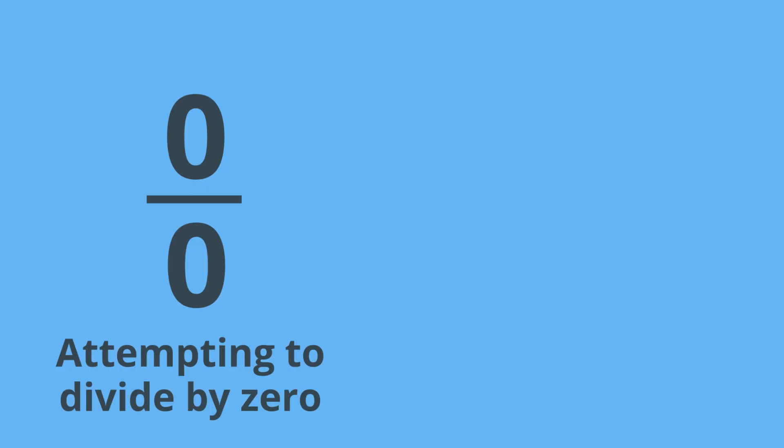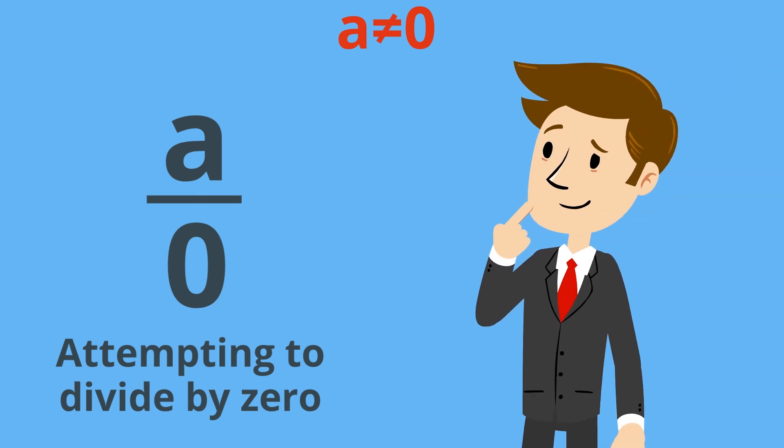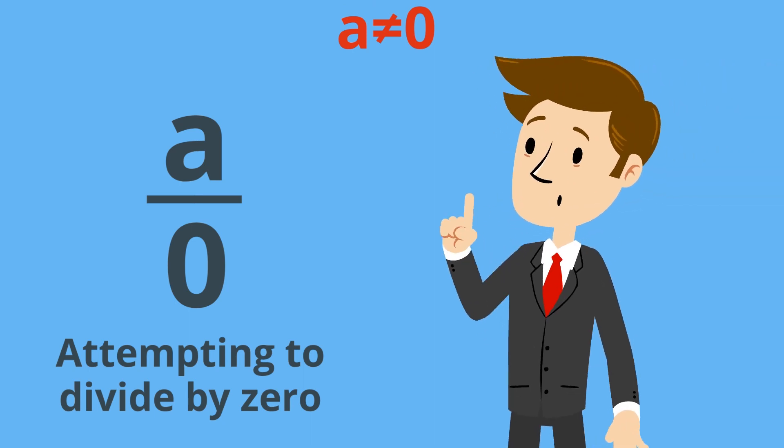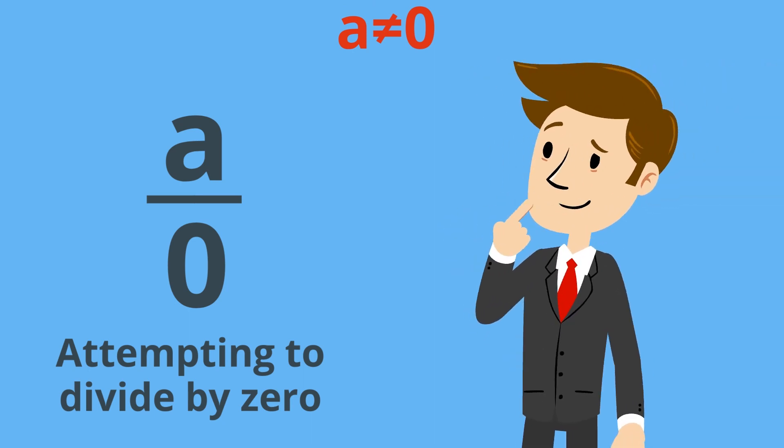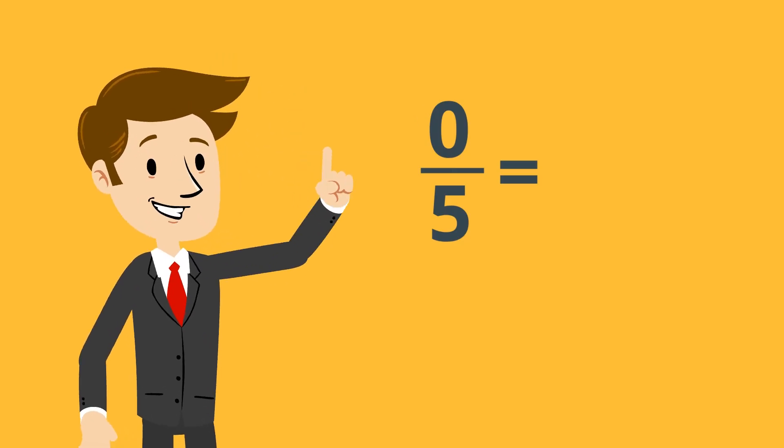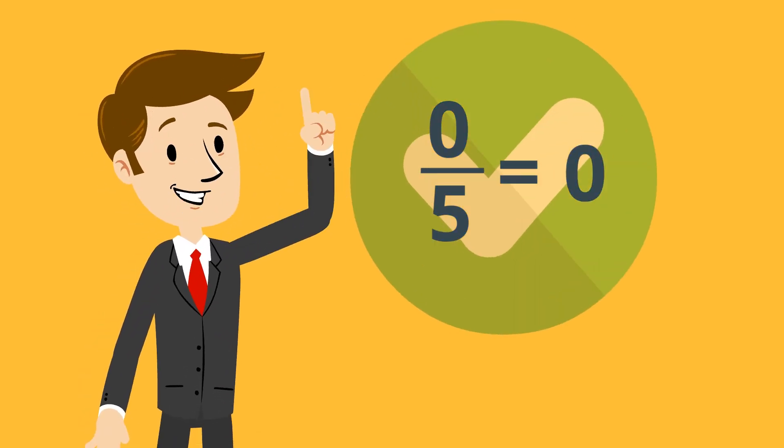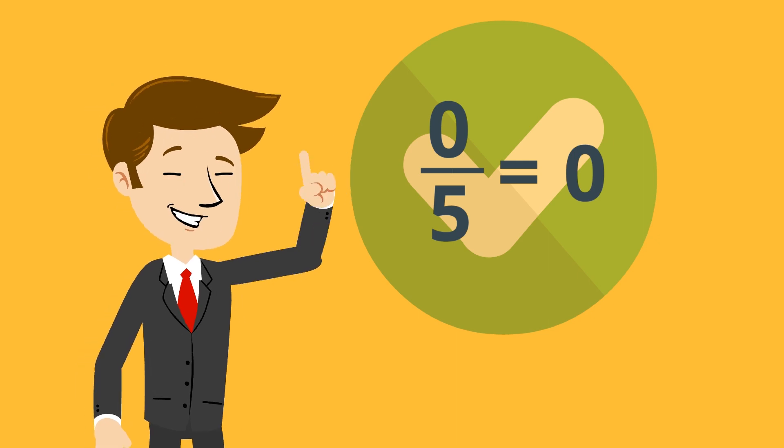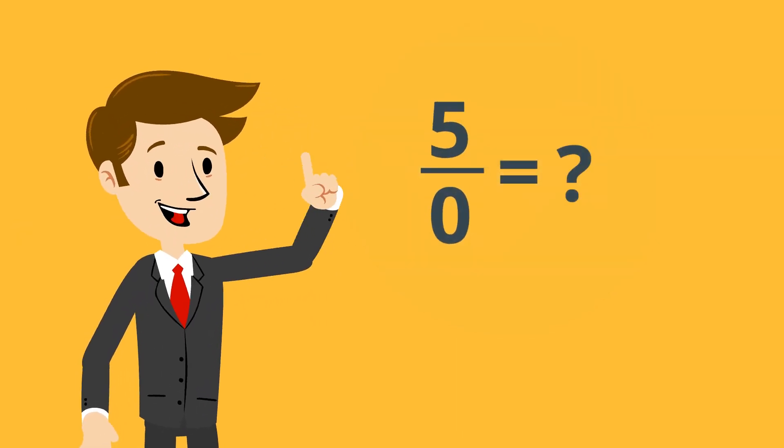Let's give it a try. First, we might simplify the problem a bit by only looking at what happens when we divide non-zero numbers by zero. This is a good place to start, since having zero in the numerator, or top, is usually not a problem. For example, we could take zero divided by five, and the answer is simply zero. So a huge part of the problem lies with actually trying to divide by zero.